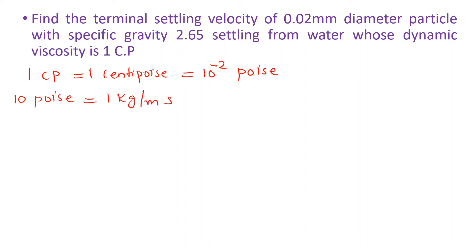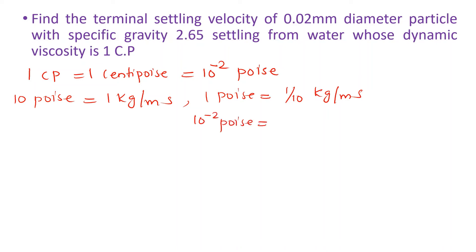10 poise is equal to 1 kilogram per meter-second. Therefore 10⁻² poise equals 10⁻² × (1/10) kg/m·s, which gives 10⁻³ kg/m·s. So 1 centipoise equals 10⁻³ kg per meter-second.